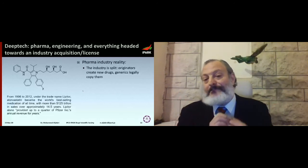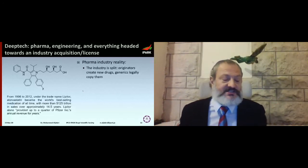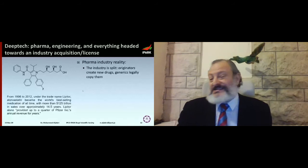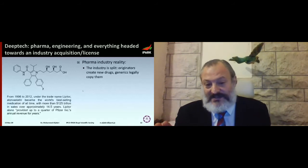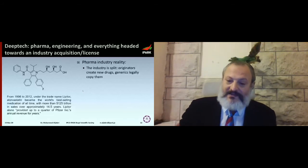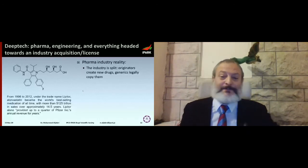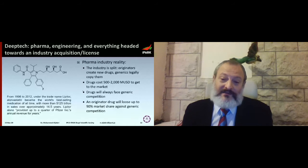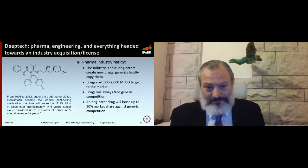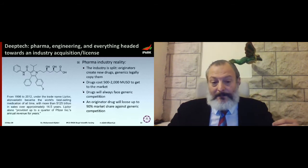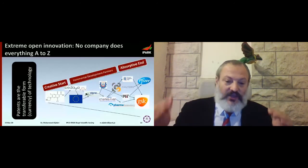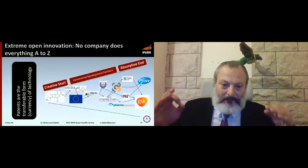Drugs will always eventually face generic competition, and an originator can lose up to 90% of their market share the moment they face generics — because generics didn't pay the $500 million to $2 billion to get the drug to market, so they can sell at a much reduced cost. This means patents are critical. Imagine discovering the perfect cure for COVID-19 — it would still cost $500 million to get it to market.